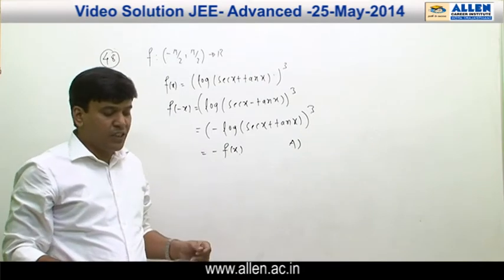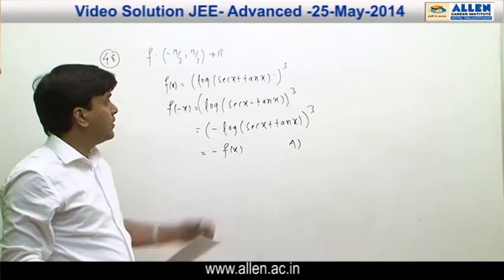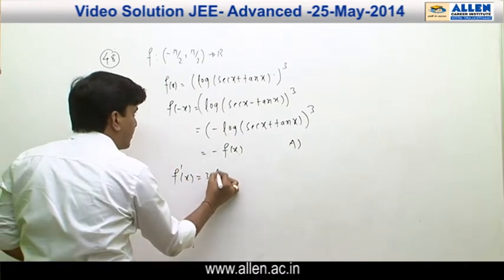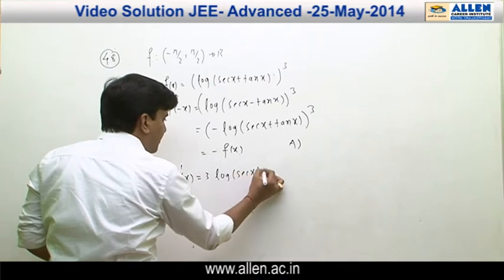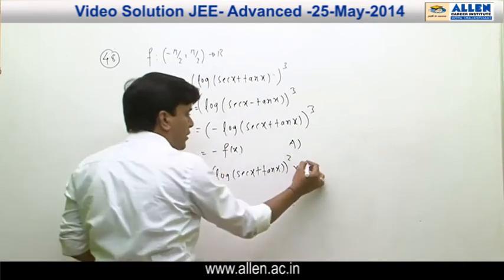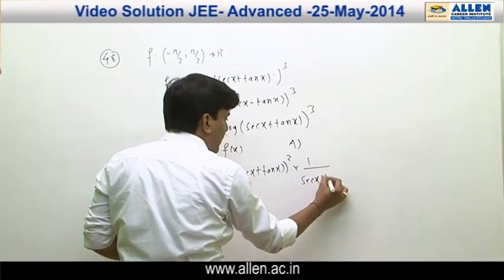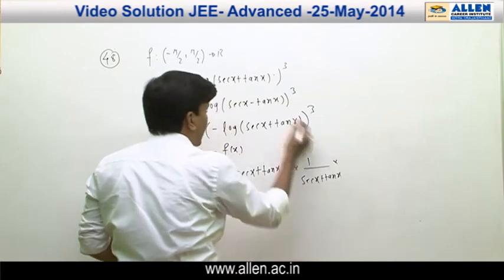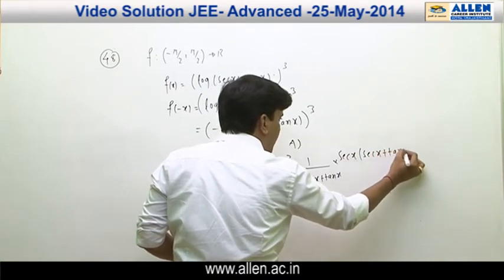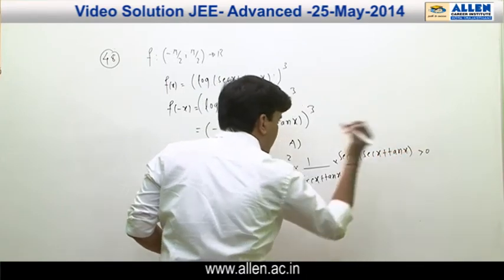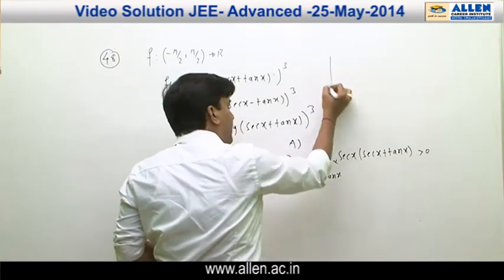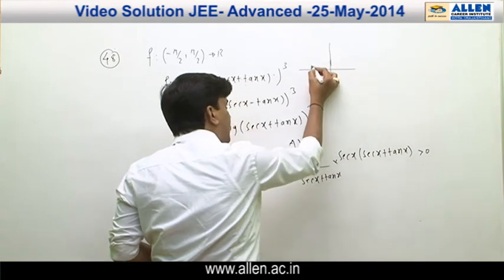Now we check whether the function is one-one or onto by examining monotonicity. f'(x) = 3[log(sec x + tan x)]² multiplied by 1/(sec x + tan x) multiplied by the derivative of (sec x + tan x), which is sec x(sec x + tan x). This is clearly positive, hence the function is increasing.